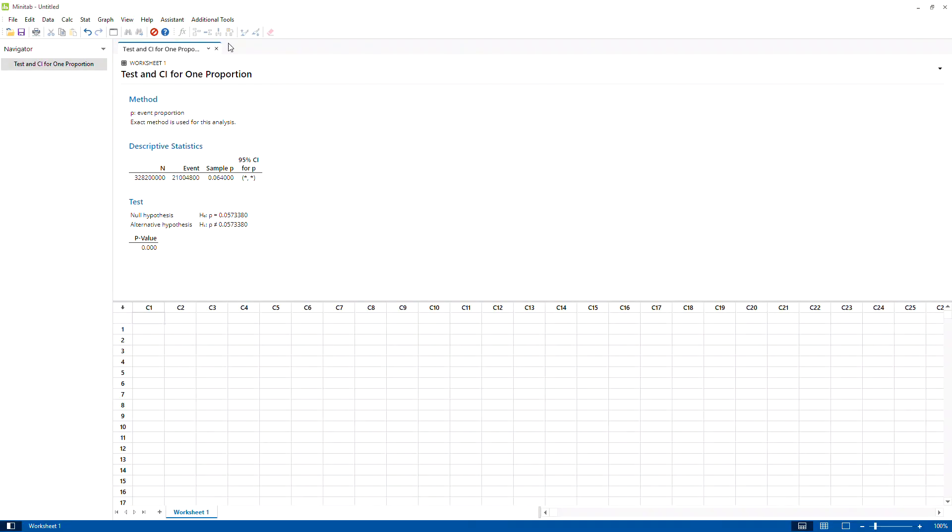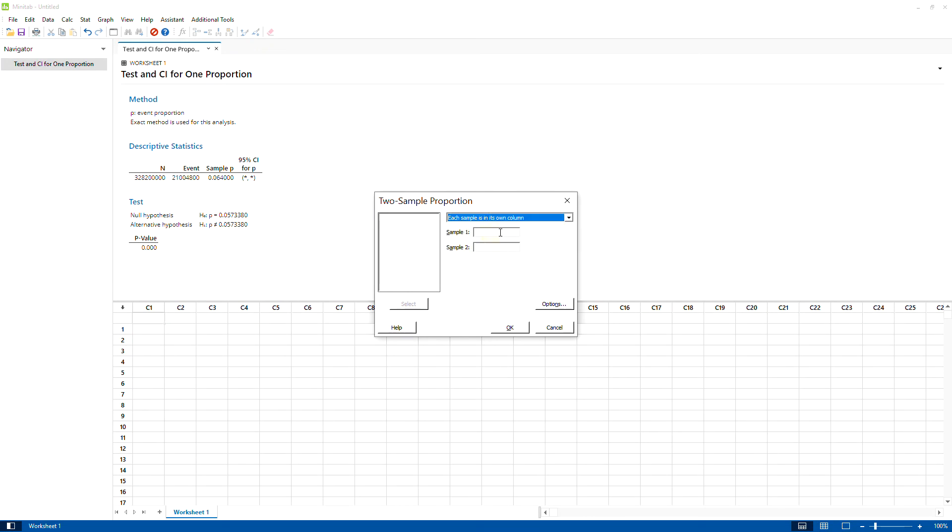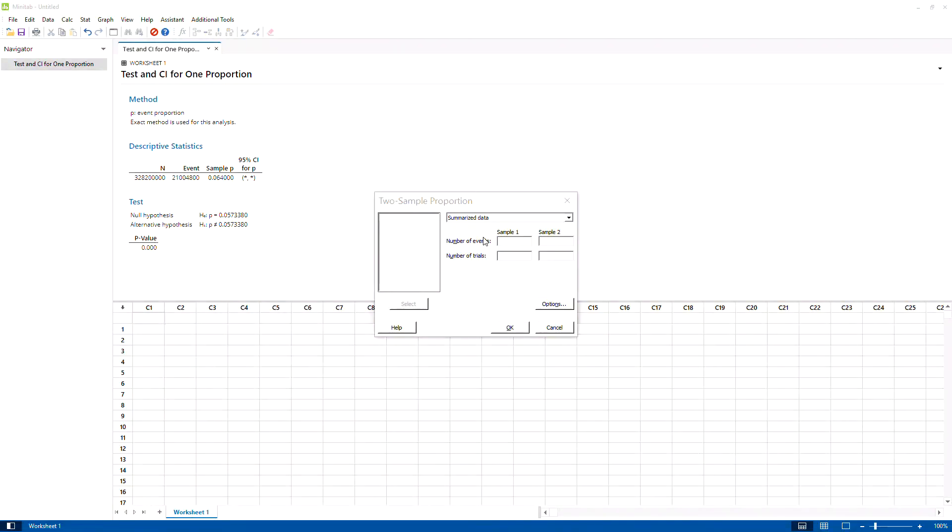Now let me show you how to do it in Minitab. Very simple, hopefully it's going to work for me - I'm not an expert in Minitab. Summarize data. Let me bring my Excel file on this side. For sample one, I'm going to copy that, Ctrl+C, Ctrl+V. The number of trials goes there, and the total male population goes there.